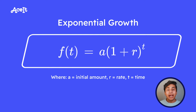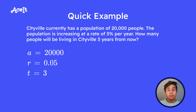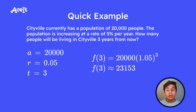Exponential growth is something that increases at an increasingly rapid rate. The equation for this, for a function of time, is equal to a times (1 + r) to the power of t, where a is your initial amount, r is your rate, and t is your time. Let's take a quick look at an example problem. Cityville currently has a population of 20,000 people. Their population is increasing at a rate of 5%, and we want to find what the population in 3 years is going to be. So our A, or initial amount, is 20,000, our rate r is 0.05, and t is 3. Plugging this into the equation, we get an ending population of 23,153 in 3 years.